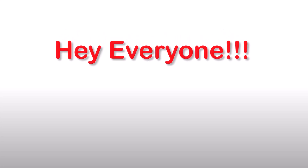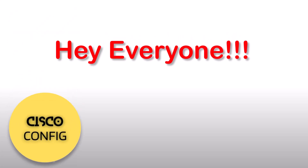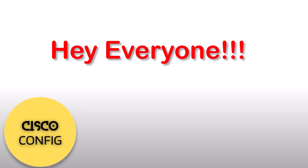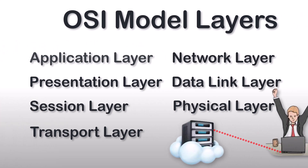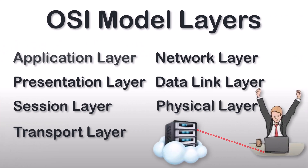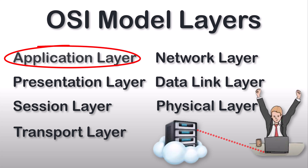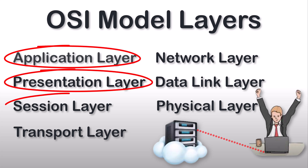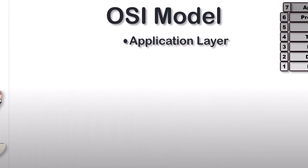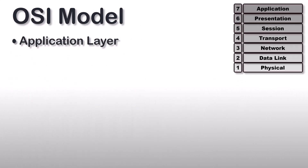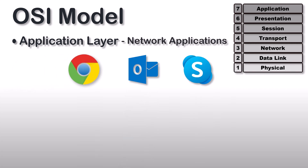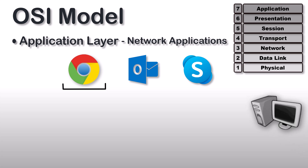Welcome back to the channel Cisco Config. In this video we will discuss the top three layers of the OSI model: application layer, presentation layer, and session layer. Application layer is used by network applications like Google Chrome, Outlook, Skype, etc. A web browser is an example of a network application running on everyone's PC.